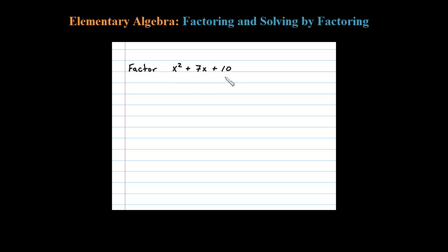Here we're asked to factor a trinomial. Since the leading coefficient is 1, we're looking for the factors of 10 that add up to 7. So 10 is 1 times 10 or 2 times 5. Certainly 2 and 5 add up to 7.